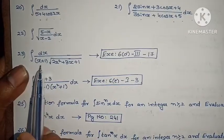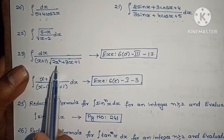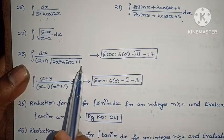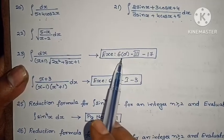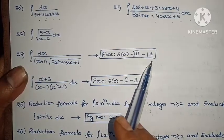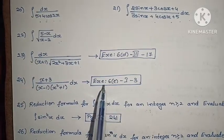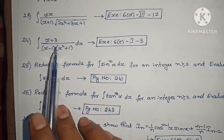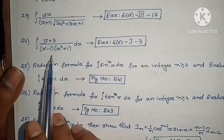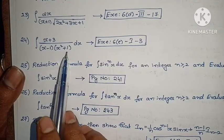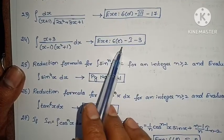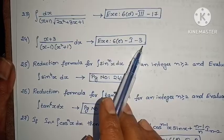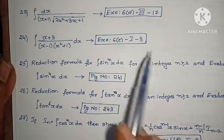Next: integral of dx/((x+1)·√(2x² + 3x + 1)), exercise 6d, Roman numeral 3, 17th problem. Next: integral of (x+3)/((x−1)(x²+1)) dx, exercise 6d, Roman numeral 1, 3rd problem.